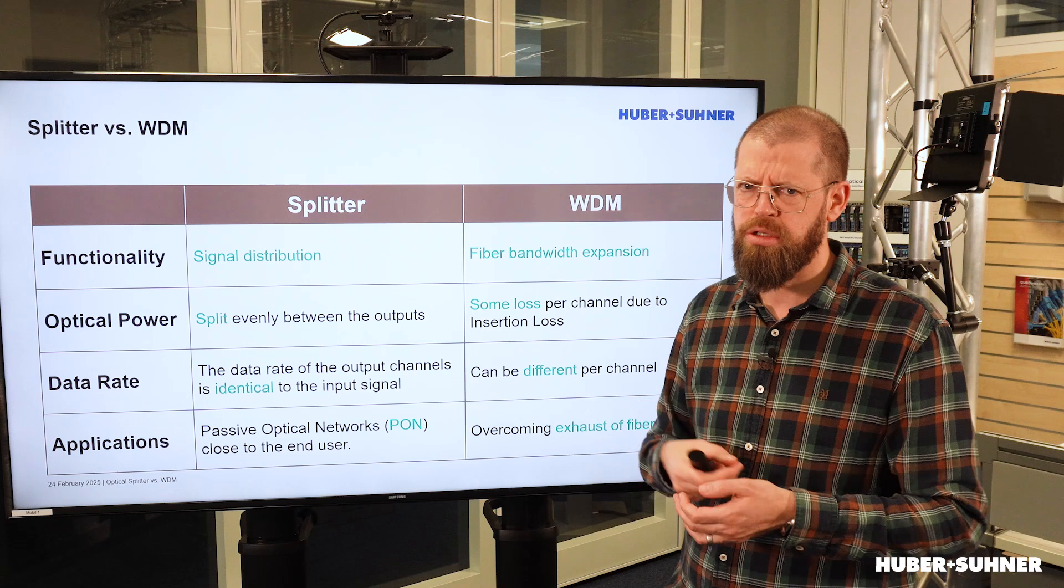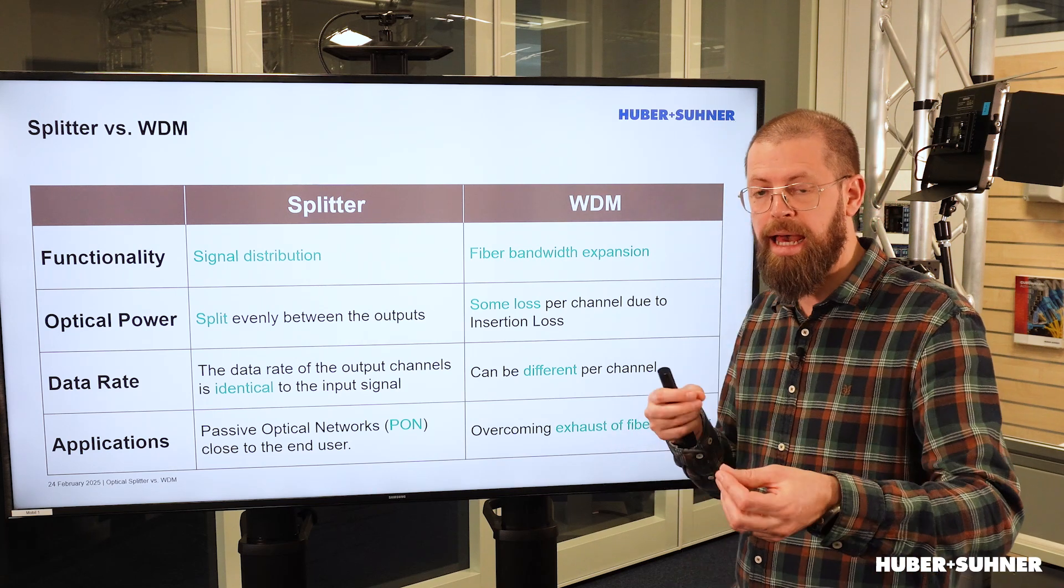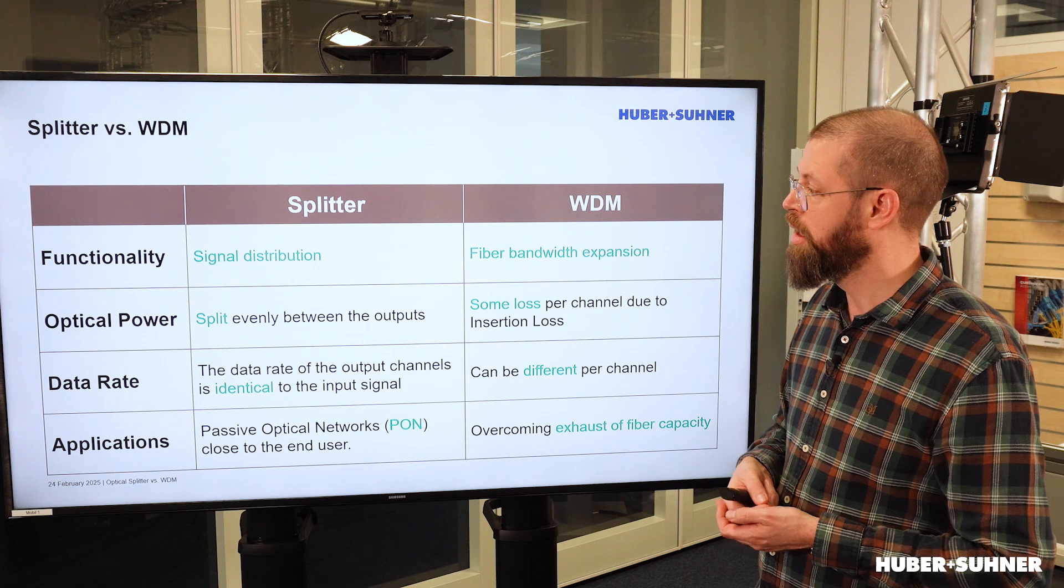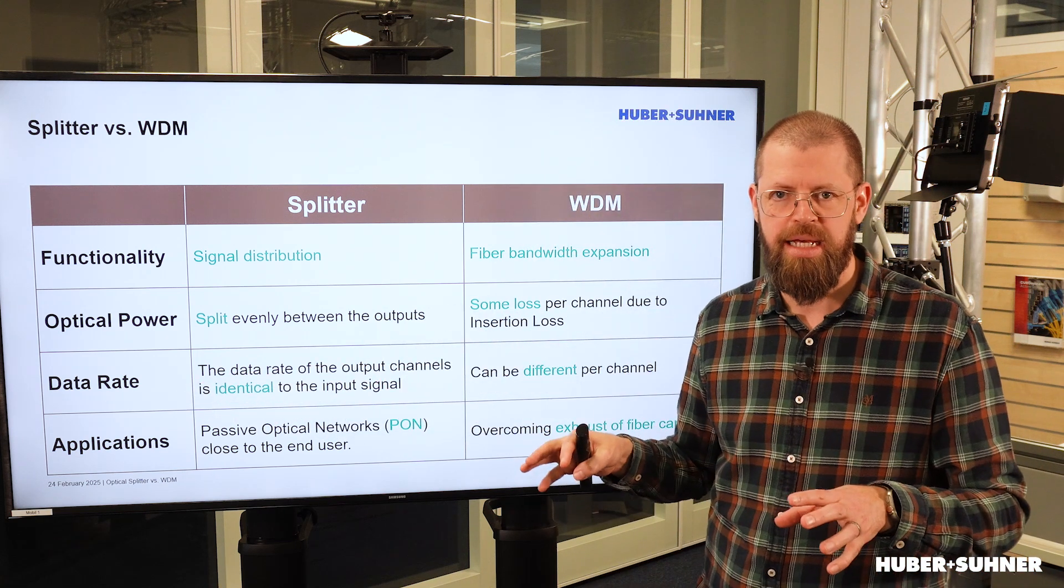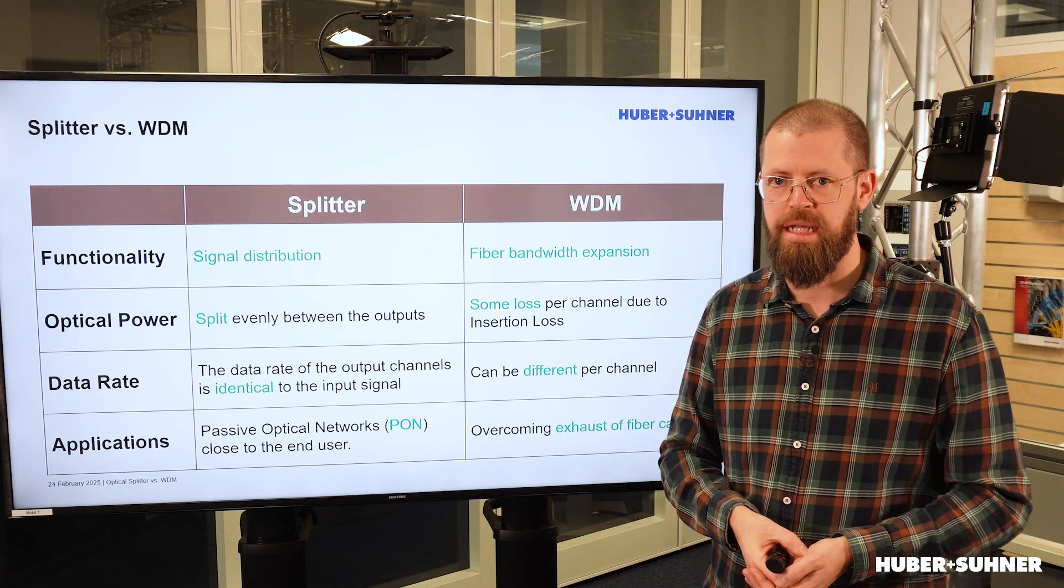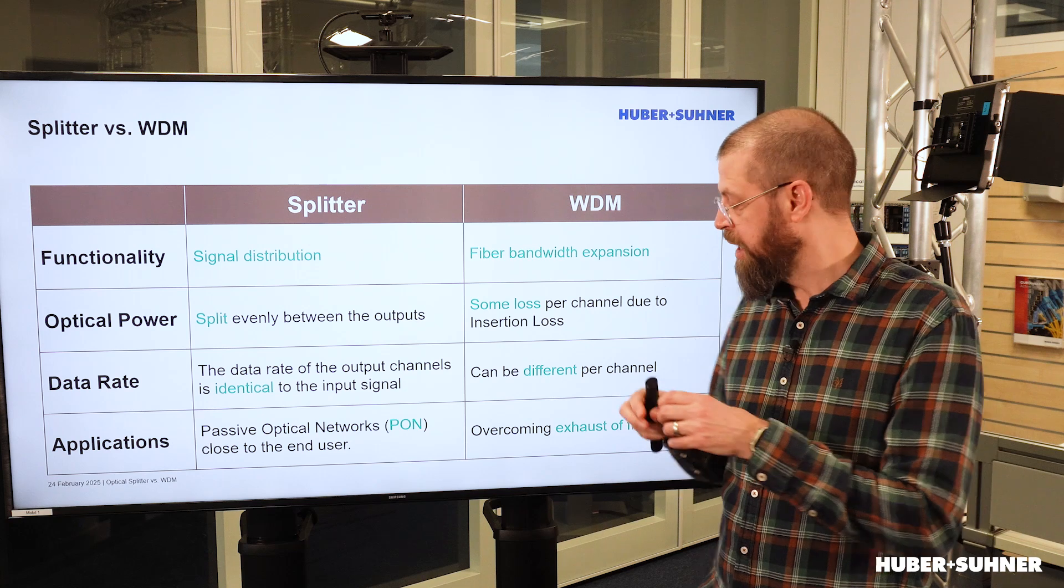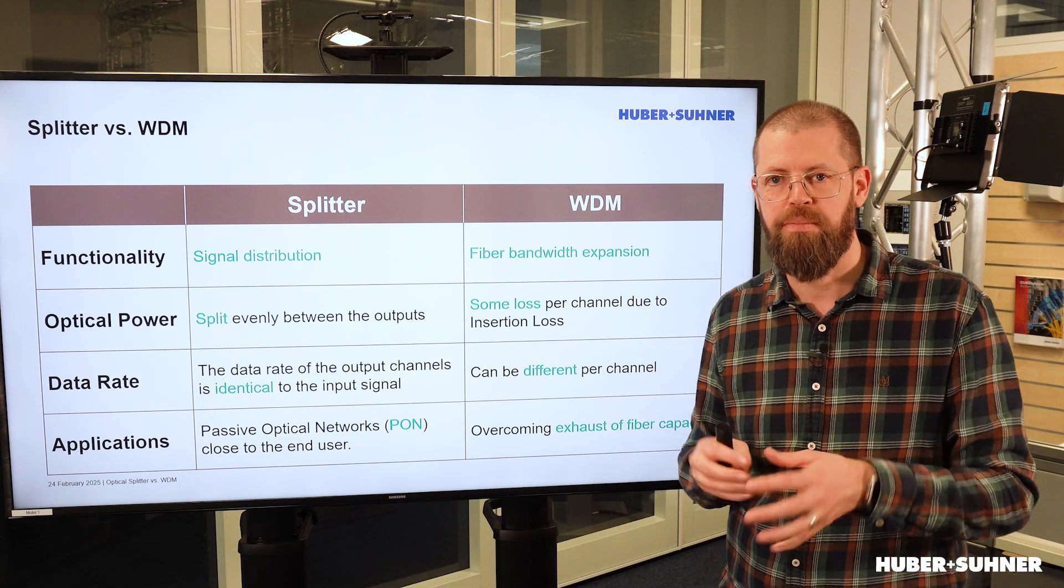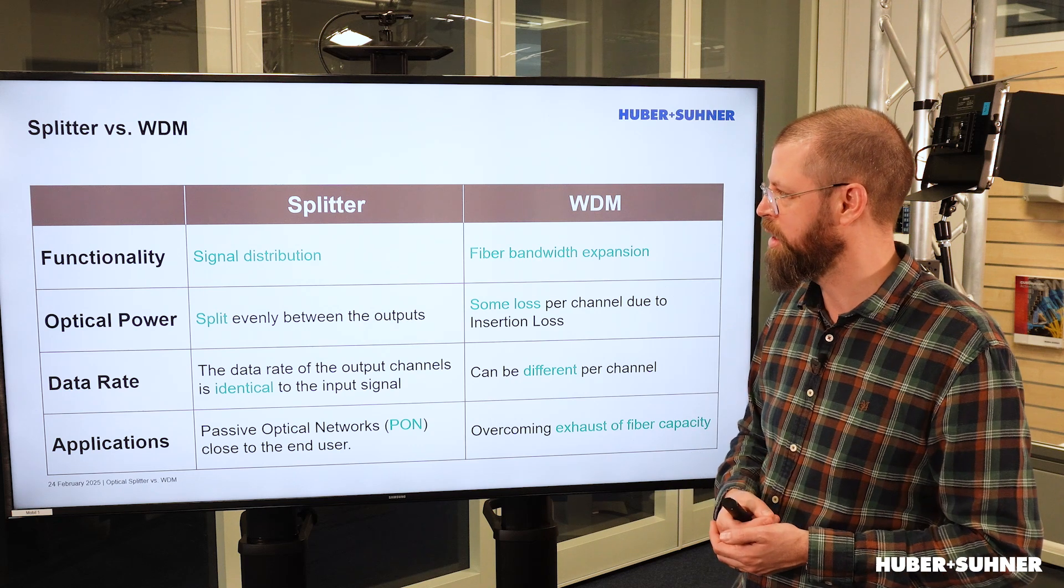And with WDM, yes, we do have some power loss, but that is more due to the insertion loss and the fiber attenuation. From the data rate point of view, the splitters have exactly the same data rate. Input and output, exactly the same, because they are literally the same signal, just the optical power is being split. Whereas WDM, they are completely different and independent channels, meaning that each individual channel can have a different data rate.